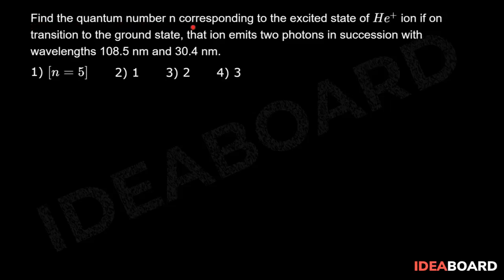Find the quantum number n corresponding to the excited state of the helium plus ion, if on transition to the ground state that ion emits two photons in succession with wavelengths 108.5 nanometers and 30.4 nanometers.